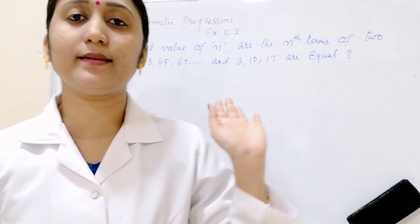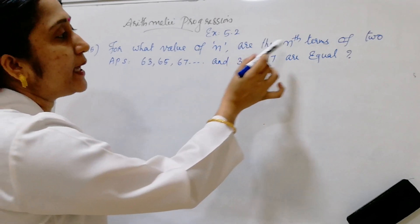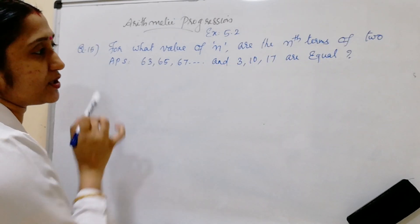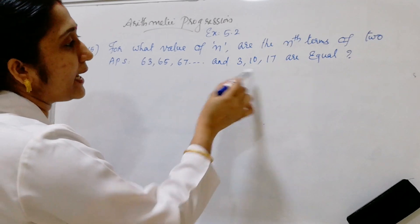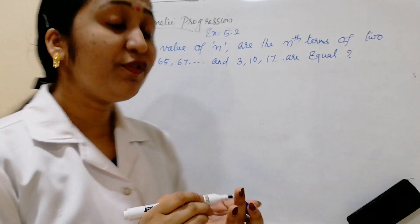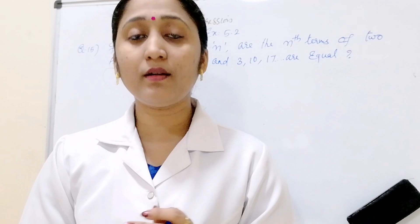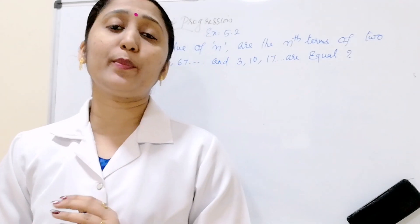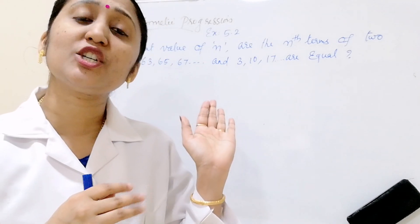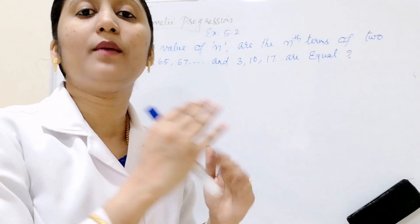Let us see what is the question. For what value of n are the nth terms of 2 APs — 63, 65, 67 and 3, 10, 17, etc. — equal? Here, given 2 arithmetic progressions. In these 2 arithmetic progressions, which value of n makes them equal? If in these 2 arithmetic progressions any one of the terms is equal, which nth term is that?